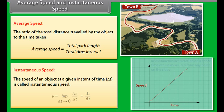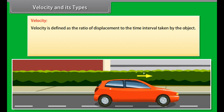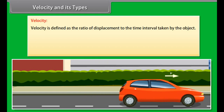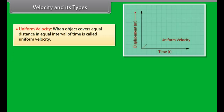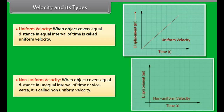Velocity and its types: Velocity is defined as the ratio of displacement to the time interval taken by the object. Therefore, velocity = displacement / time interval. It is a vector quantity. Its SI unit is m/s and dimensional formula is M⁰L¹T⁻¹. Uniform velocity: When an object covers equal distances in equal intervals of time. Non-uniform velocity: When an object covers unequal distances in equal intervals of time, or vice versa.